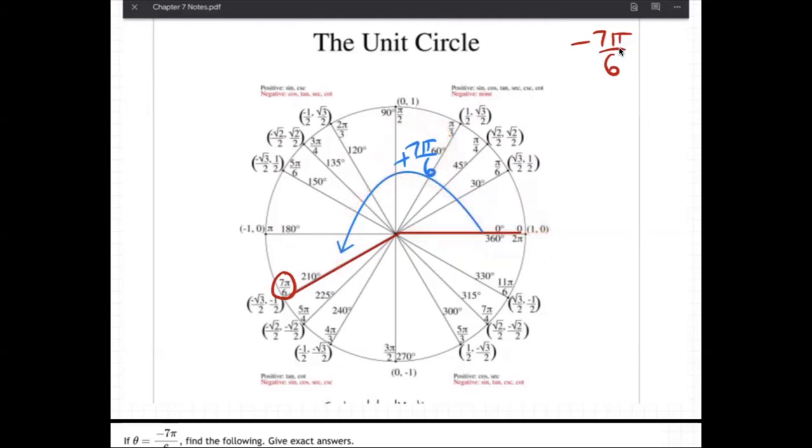So then just do the same thing in the negative direction. So I'm going to go starting here, starting going down, halfway around, and one more line. Right there must be negative 7π over 6, which ends right here. Does that make sense?